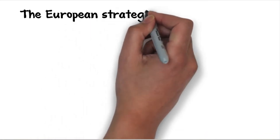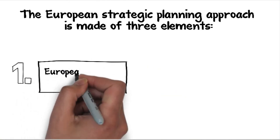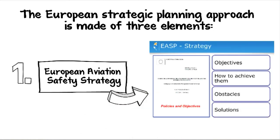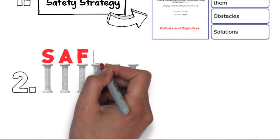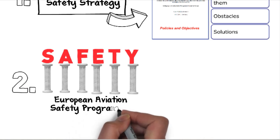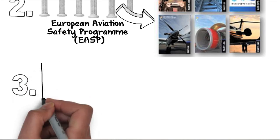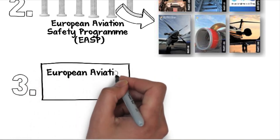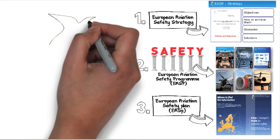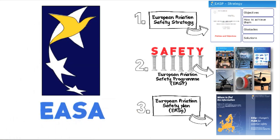The European strategic planning approach is made of three elements. Firstly, a set of policies and objectives from political authorities, the European Aviation Safety Strategy. Secondly, an integrated set of regulations and activities aimed at improving safety, the European Aviation Safety Programme, which complements at European level the state safety programmes of the EU member states. Finally, the High Level Safety Issues Assessment and Related Action Plan, the European Aviation Safety Plan, developed by the European Aviation Safety Agency following consultation with all stakeholders and reviewed and updated on an annual basis.